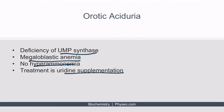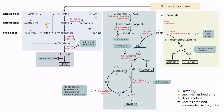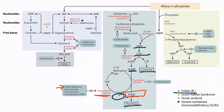From UMP, UDP is formed, which can then make either cytosine or thymine. Notice that the conversion of deoxyuridine monophosphate (dUMP) to deoxythymidine monophosphate (dTMP) is unique because it requires folate. A folate deficiency inhibits dihydrofolate reductase, which in turn inhibits the synthesis of dTMP.